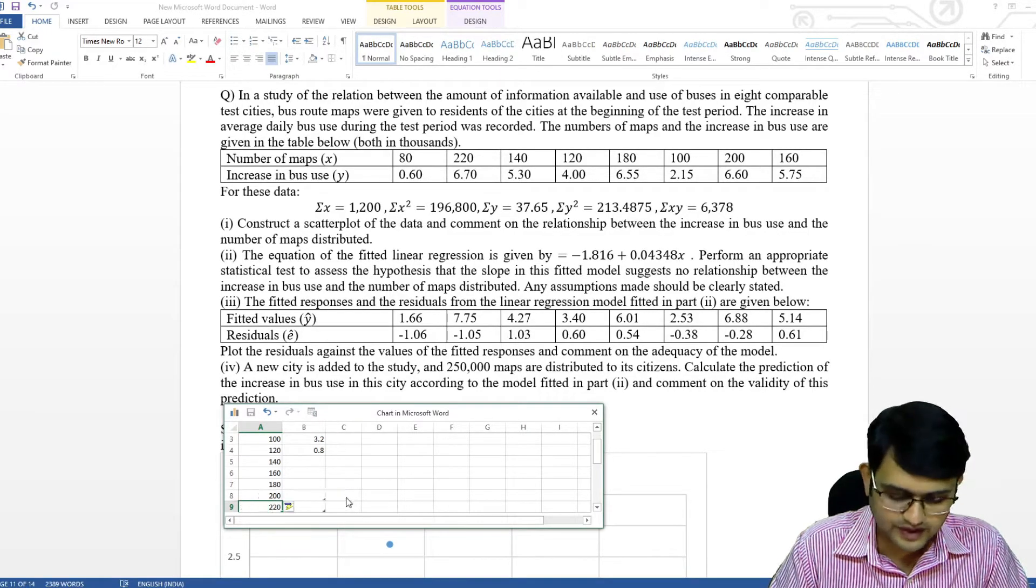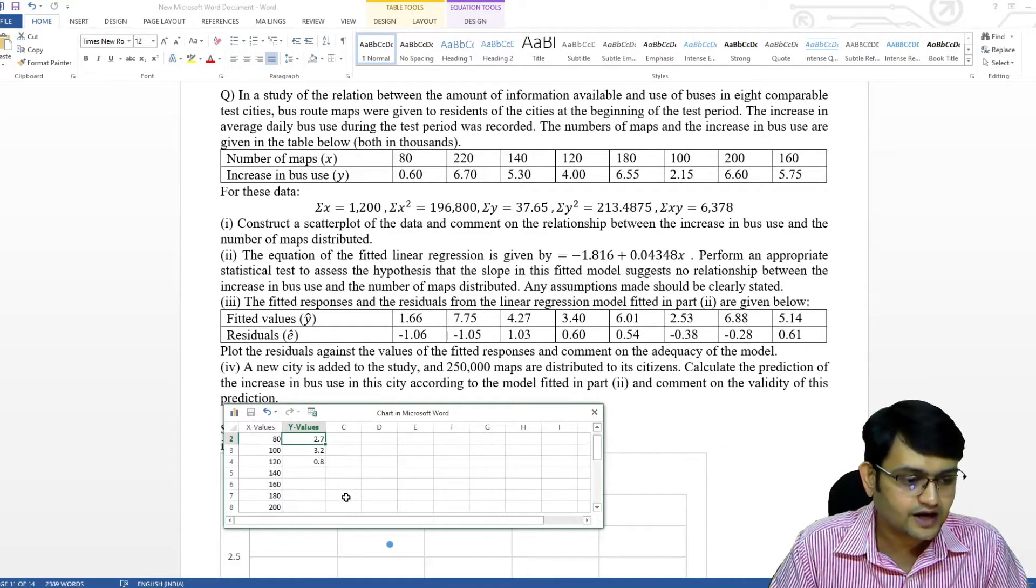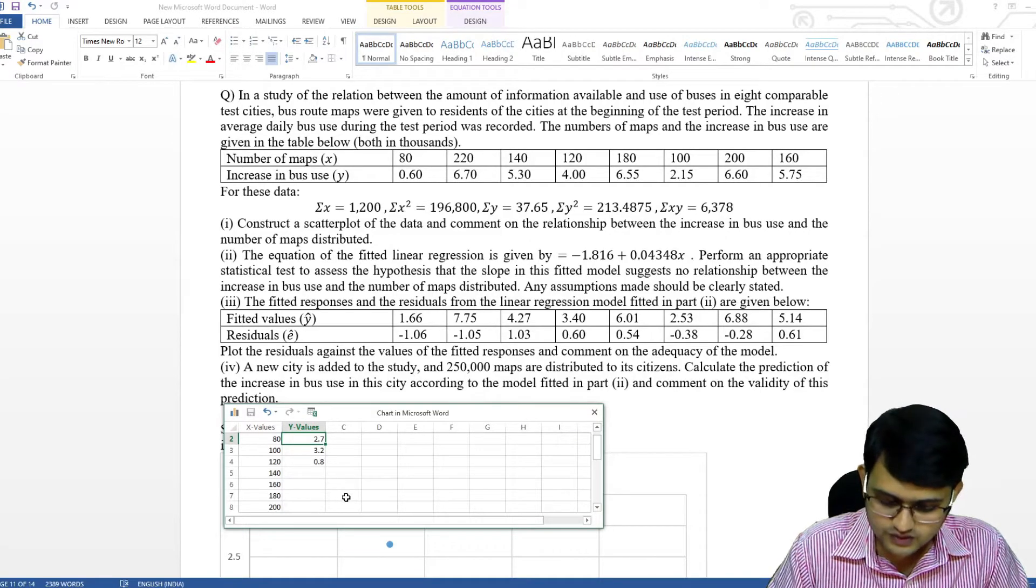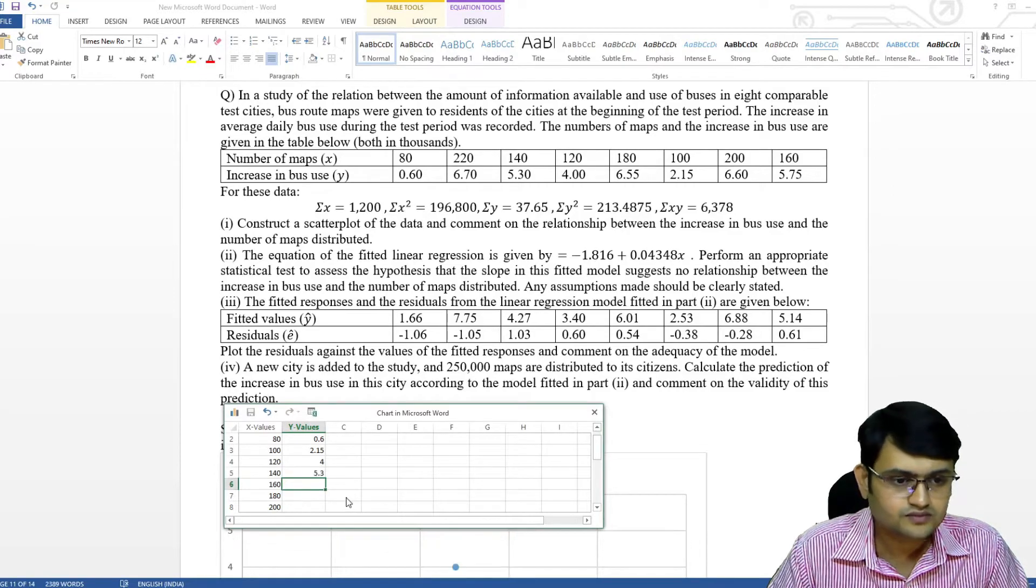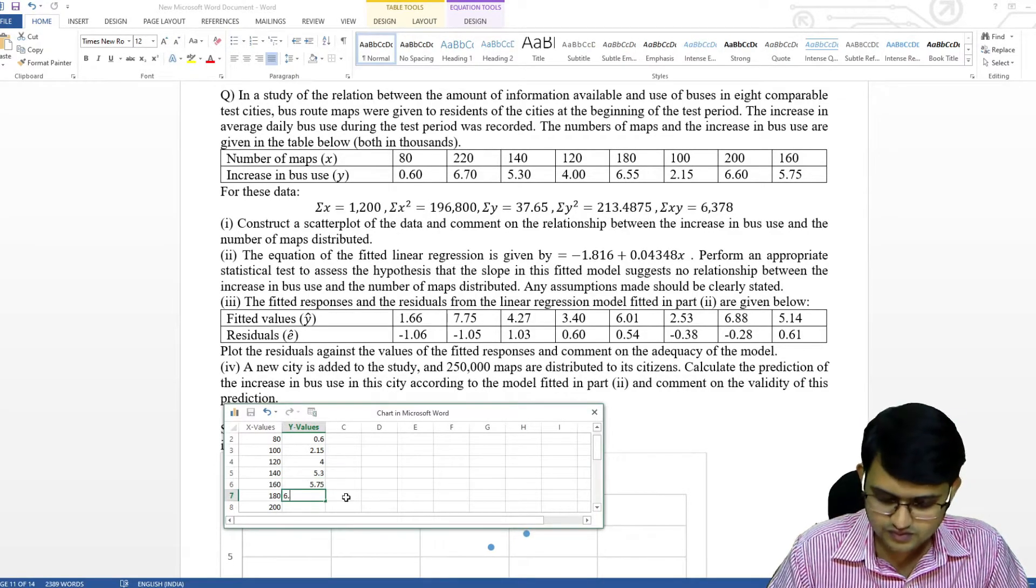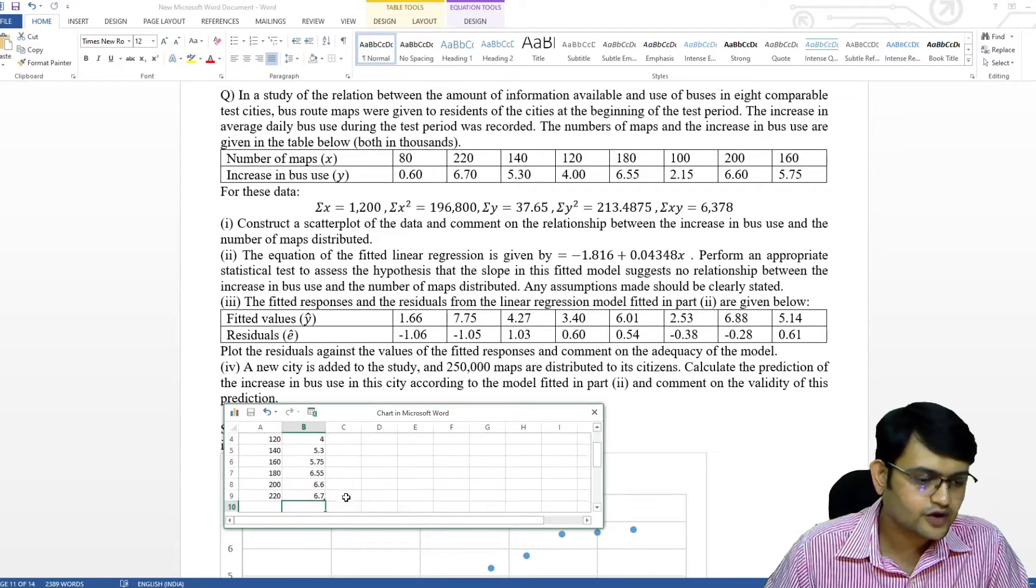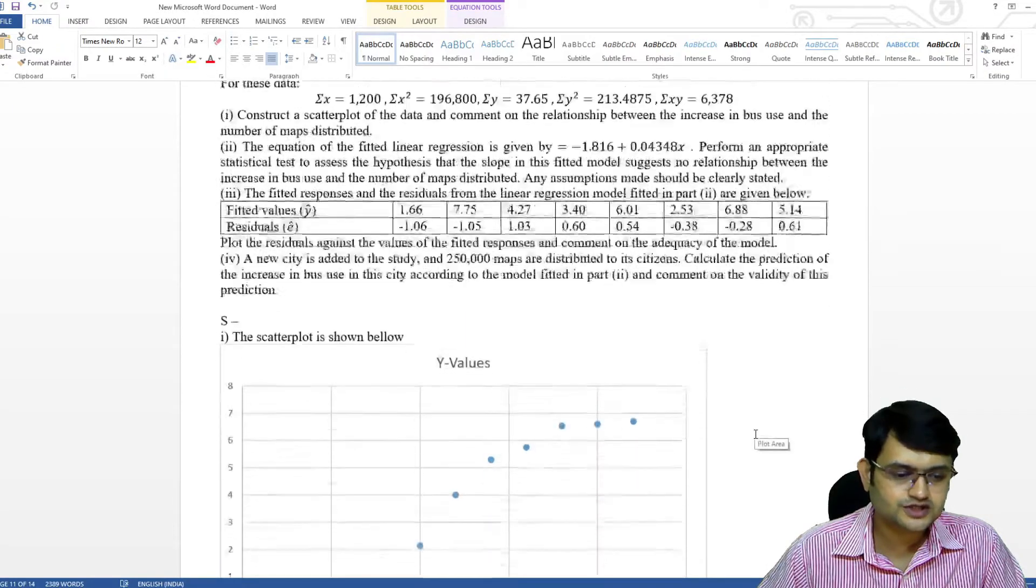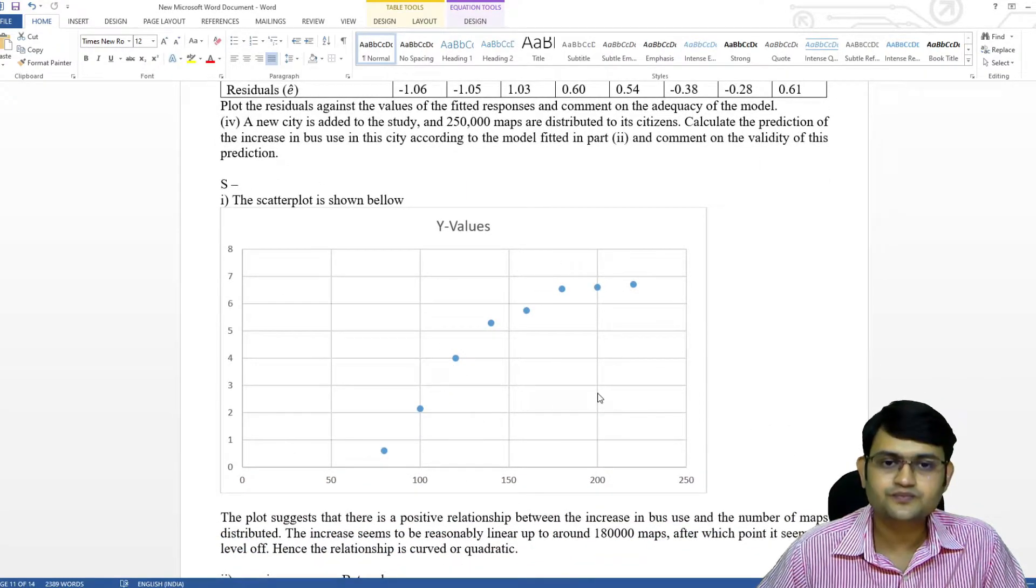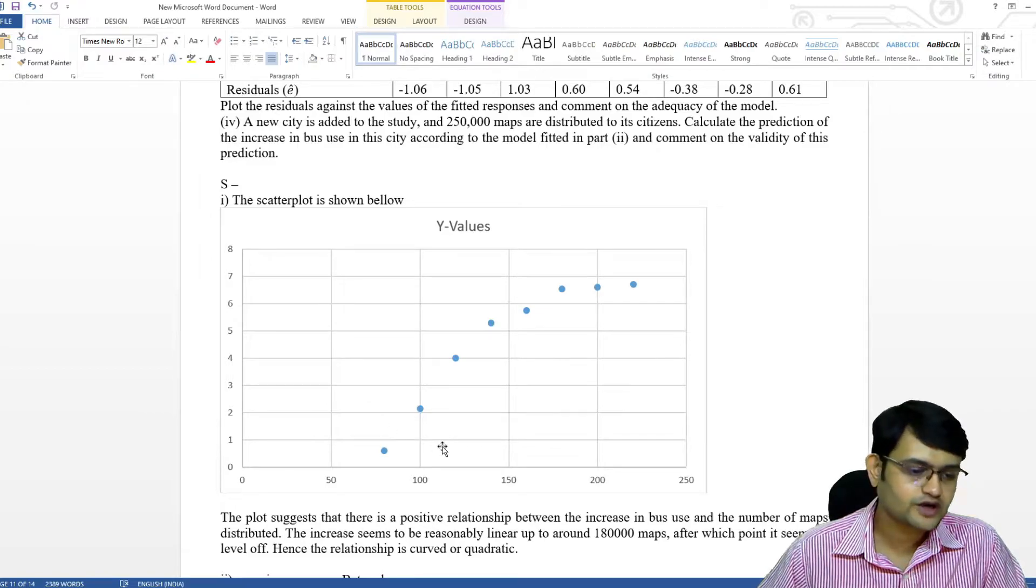220. These are the values, then we'll just write down their corresponding y values. And after you are done with all your values, all you have to do is close the sections sheet and you will see you have your chart. This is our scatter plot diagram.